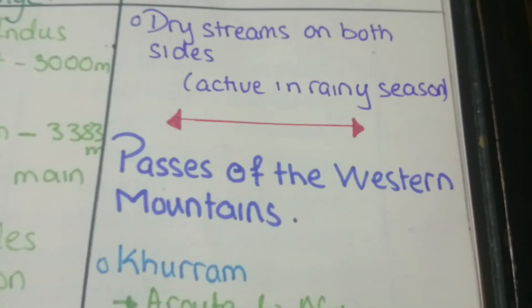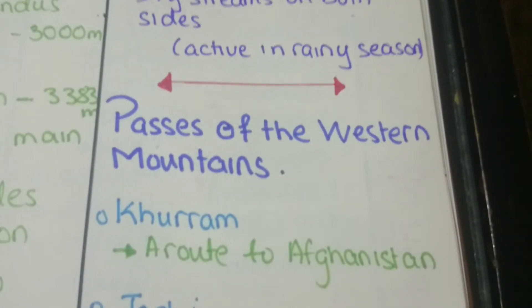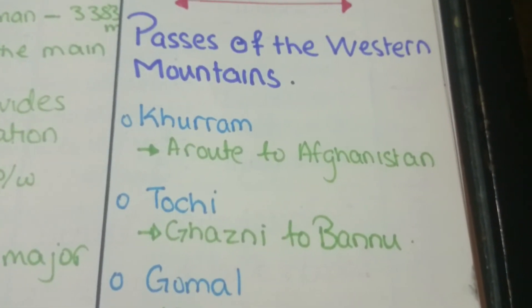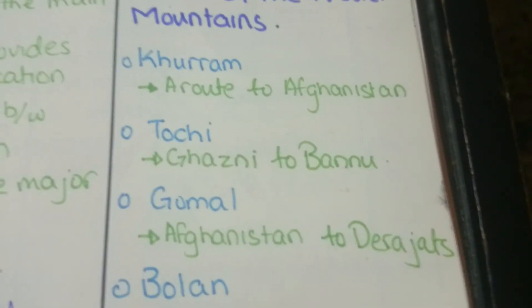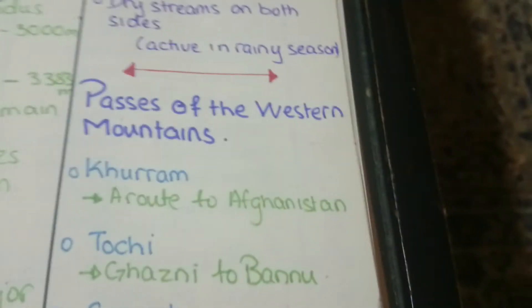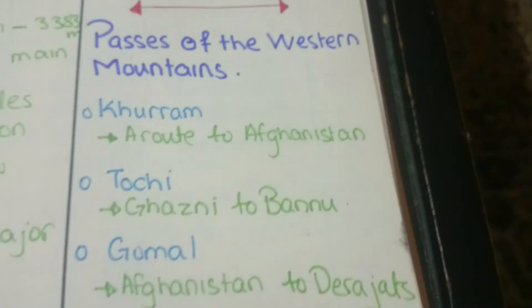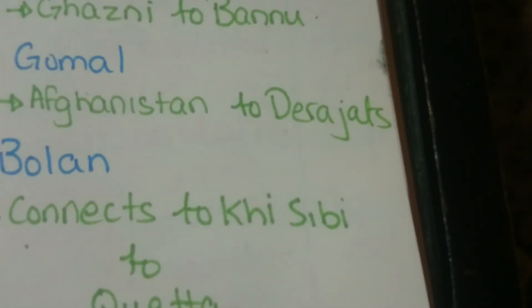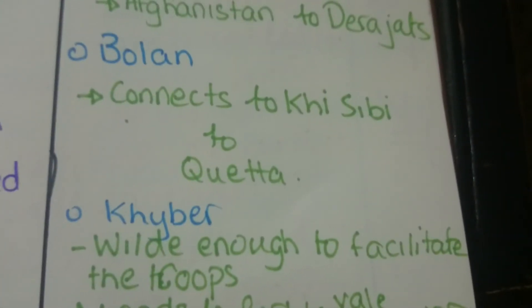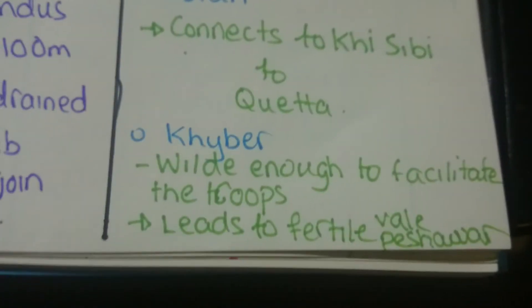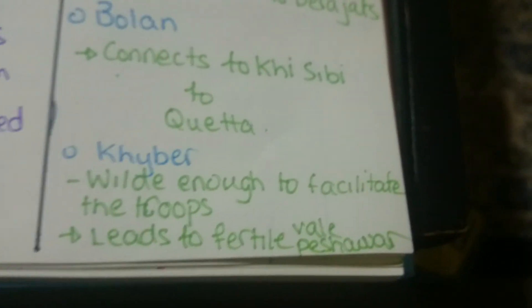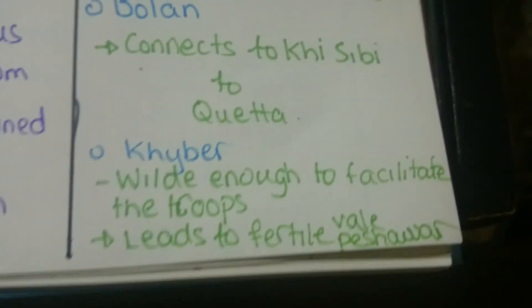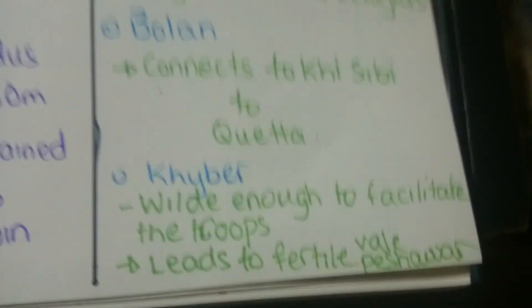The main passes of the Western Mountains are Kuram, Tochi, Gomal, Bolan, and Khyber. The Kuram pass is a route to Afghanistan. Tochi is a route from Ghazni to Bannu. Gomal is a route from Afghanistan to Dera Ismail Khan (Derajat). Bolan connects Karachi and Sibi to Quetta. The Khyber Pass is strategically significant and leads to the fertile Vale of Peshawar.